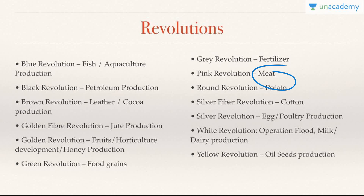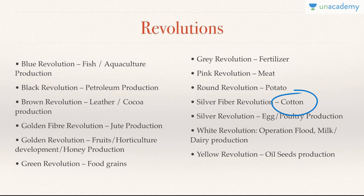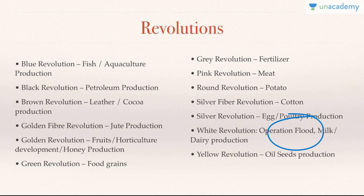Round revolution is related to potatoes since a potato is round. Silver fiber revolution is related to cotton. Silver revolution is related to egg and poultry production. White revolution is related to dairy operation, also known as Operation Flood in India. Yellow revolution is related to oil seeds production.